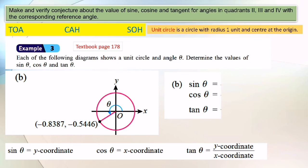Okay, part B. Now you know already sine theta actually equals y-coordinate based on the unit circle, cosine theta equals x-coordinate, and tangent theta equals y-coordinate over x-coordinate. Then you can use this formula to answer this question. So sine theta, we refer to y-coordinate here. The answer is negative 0.5446.